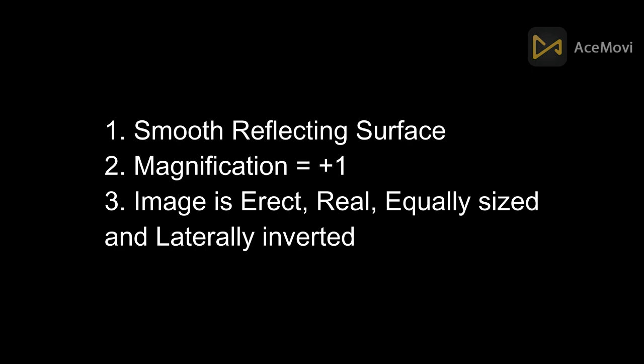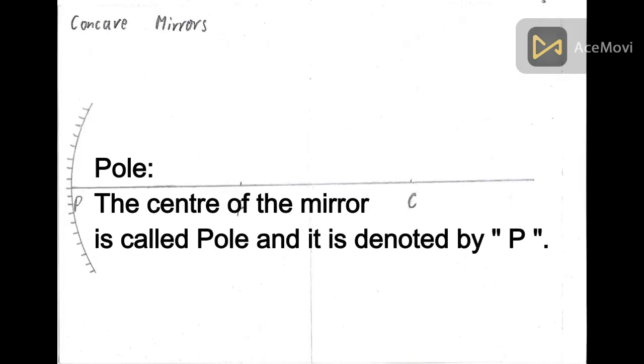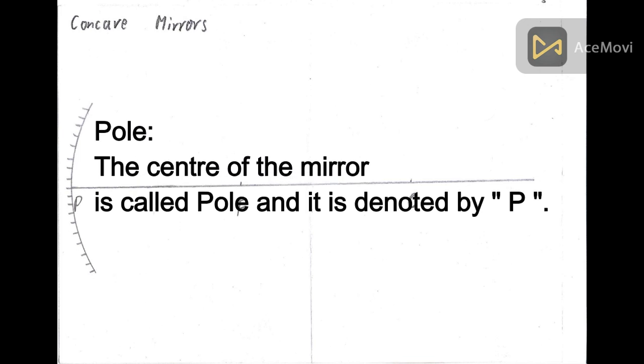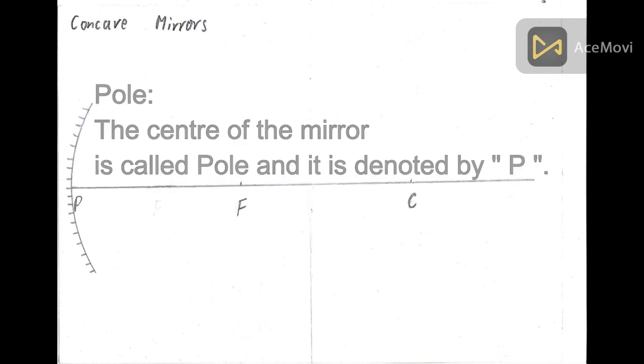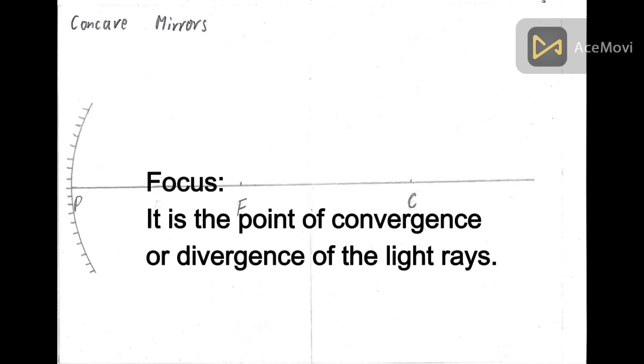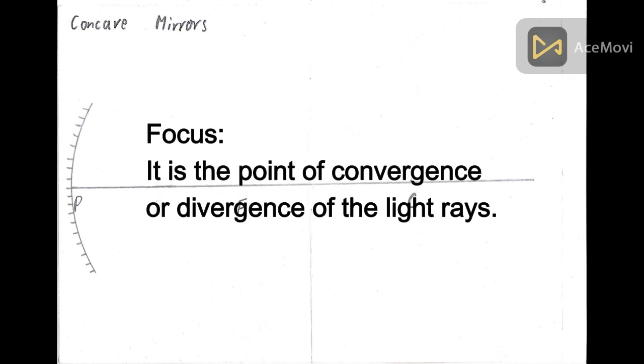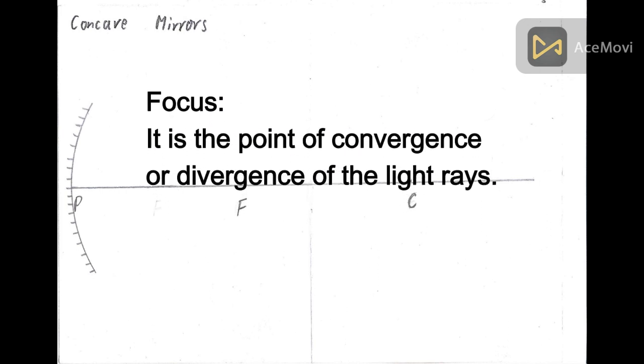Before going to spherical mirrors, we need to understand first few terms which are: Pole - it is the center of the mirror and it is denoted by P. Focus - it is the point of convergence or divergence of the light rays. It is denoted by F.